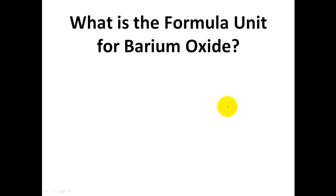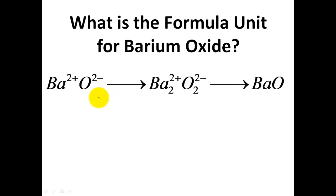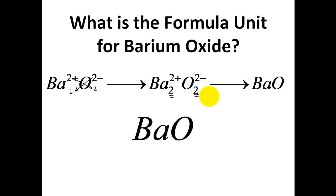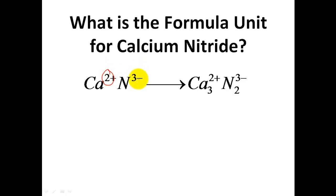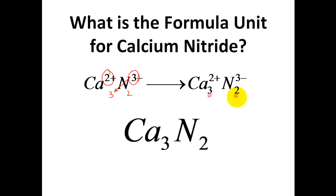Barium oxide is a unique question — please make an attempt. Barium has a 2-plus charge crossed over to oxygen, and oxygen has a 2-minus charge crossed over to barium, giving a 2-2 ratio. But we're not done — you must simplify and reduce to the lowest common number. Since 2 and 2 reduce to 1 and 1, the final formula unit is BaO. Next, try calcium nitride. Calcium is a 2-plus ion, nitrogen is a 3-minus ion. Crossing them gives 3 and 2, which cannot be reduced further, so the formula unit is Ca₃N₂.